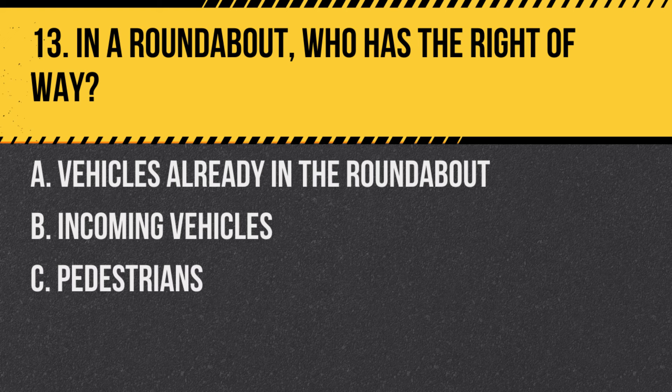Question 13: In a roundabout, who has the right of way? A. Vehicles already in the roundabout. B. Incoming vehicles. C. Pedestrians. Answer: A. Vehicles already in the roundabout. Vehicles already circulating in a roundabout have the right of way over those waiting to enter.